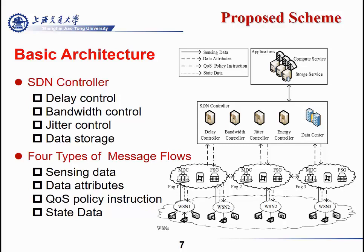For sensors in the WSN, they only need to send data as a source node, receive data as a destination node, or send their own state to the fog. The fog only needs to receive the data and leave QoS provision to the SDN control. When SDN control receives the network state and data attributes, it can dynamically realize QoS provision. Since fog is localized, it doesn't need to know other fog or WSN states, which reduces latency.